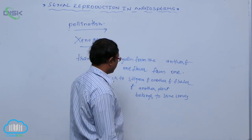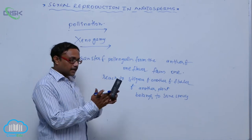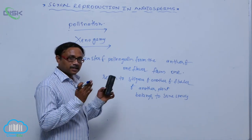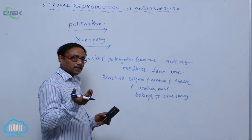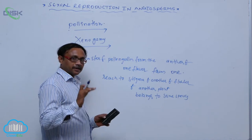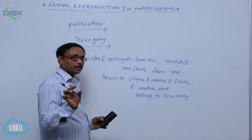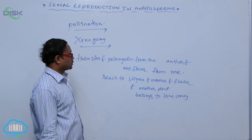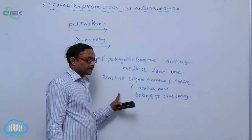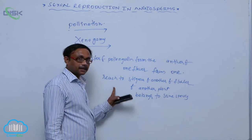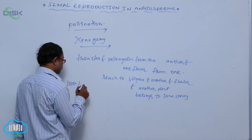In Xenogamy, plants are different and flowers are different. Pollen grains from one flower reach the stigma of another flower of another plant belonging to the same species. This is known as Xenogamy. It is 100% cross-pollination.